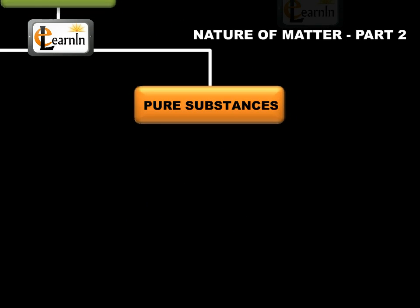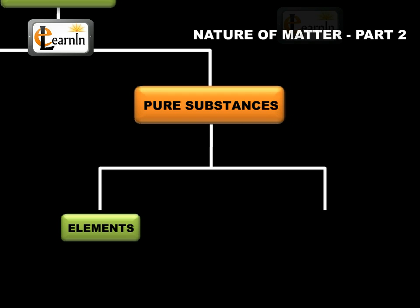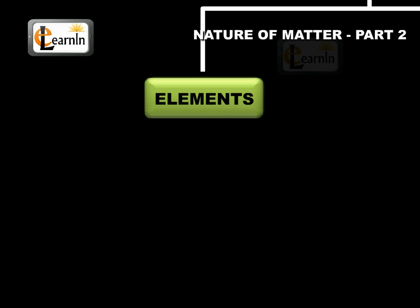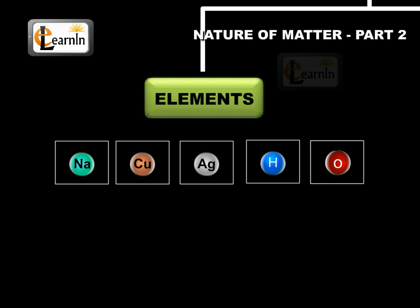Pure substances can be further classified into elements and compounds. An element consists of only one type of particle. These particles may be atoms or molecules.